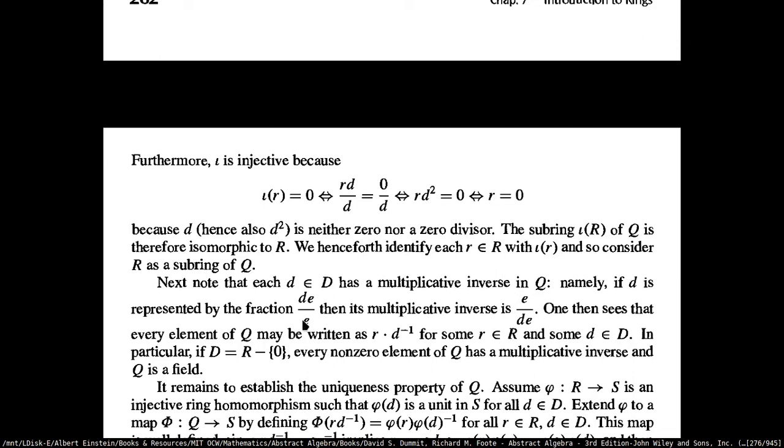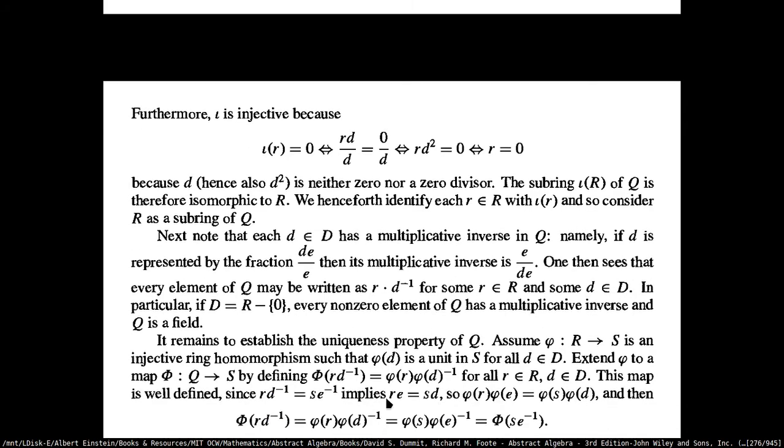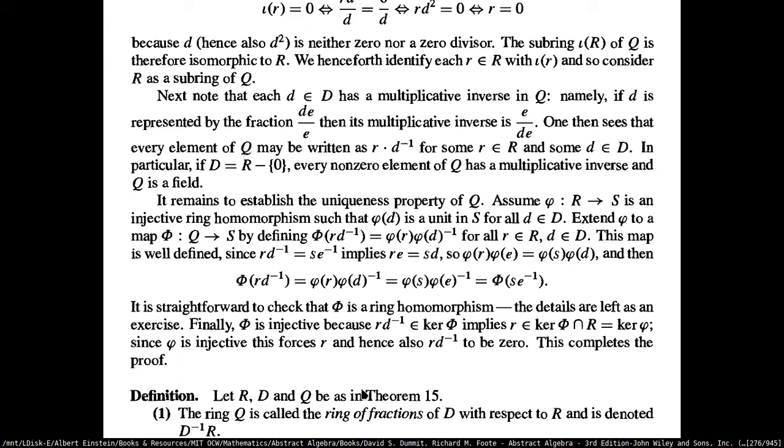For the multiplicative inverse, if you have R times D-inverse equal to S times E-inverse, you have to make sure that RE equals SD, and when you restrict this to the lowercase phi, phi of R times phi of E works nicely with phi of S and phi of D. So it's checking the basic conditions of homomorphisms and trying to construct something we defined here.